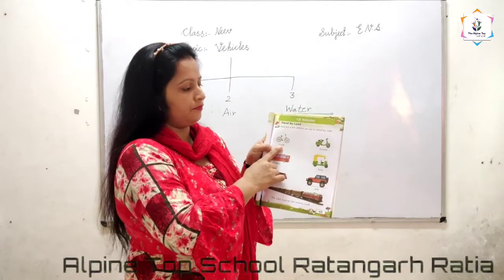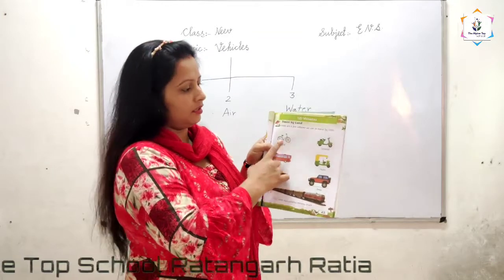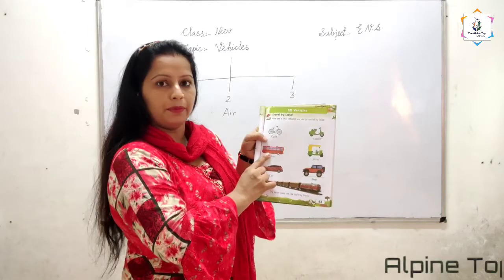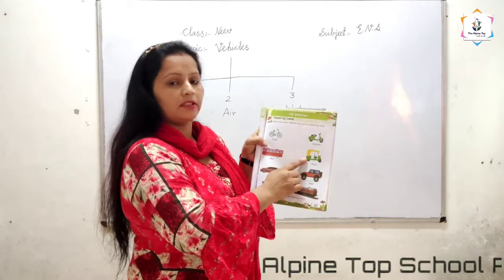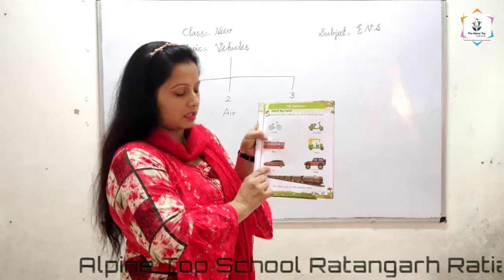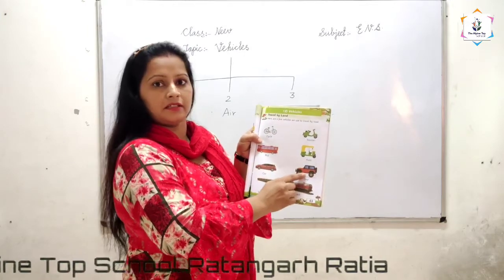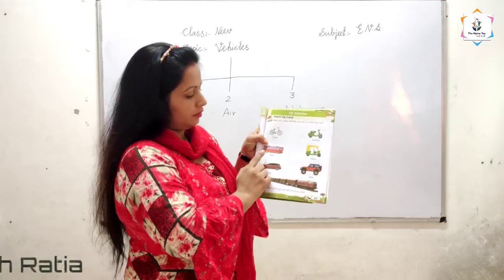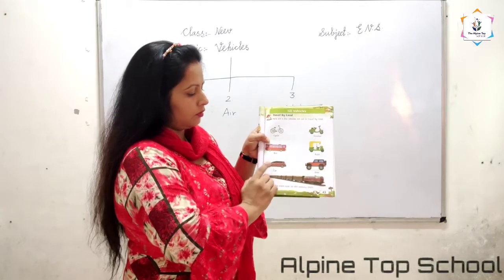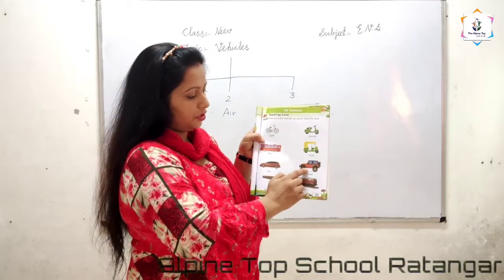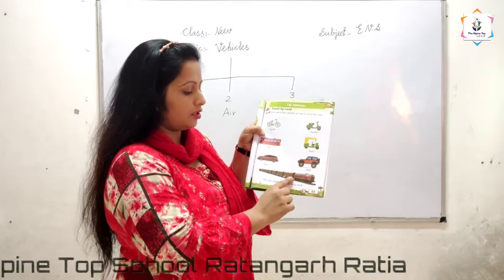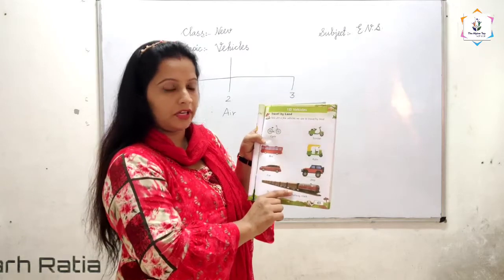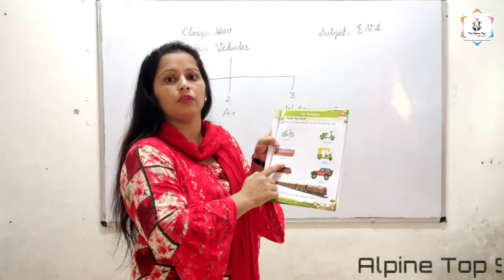So look: first is cycle. Next is scooter. Next is bus. Next is auto. Next is car. Next is jeep. And this is train. The train runs on the railway track.